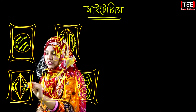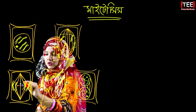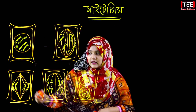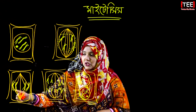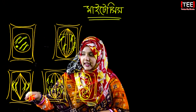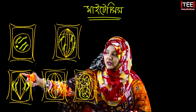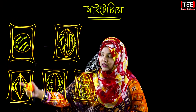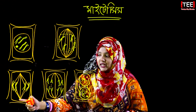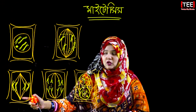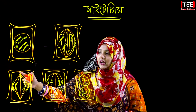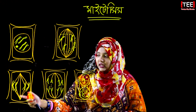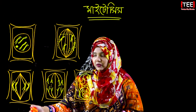The centromeres are aligned so that we will get to the equatorial plate line. This line is the metaphase plate, and it is the equatorial line of the cell.